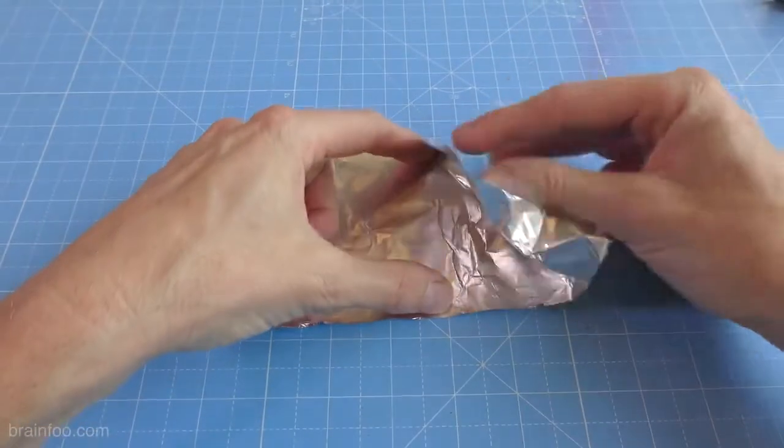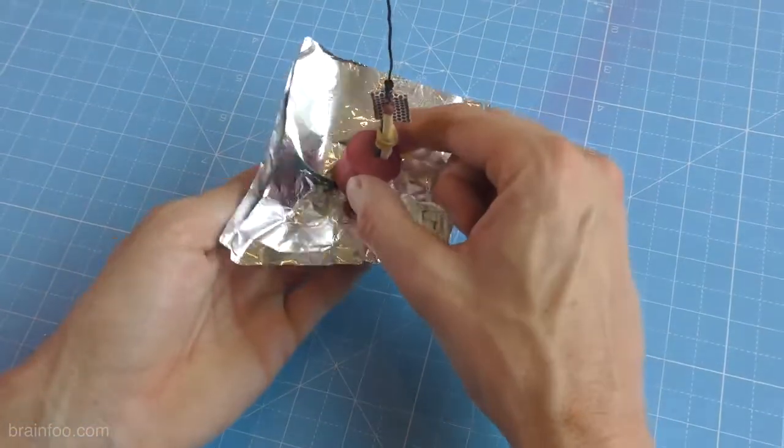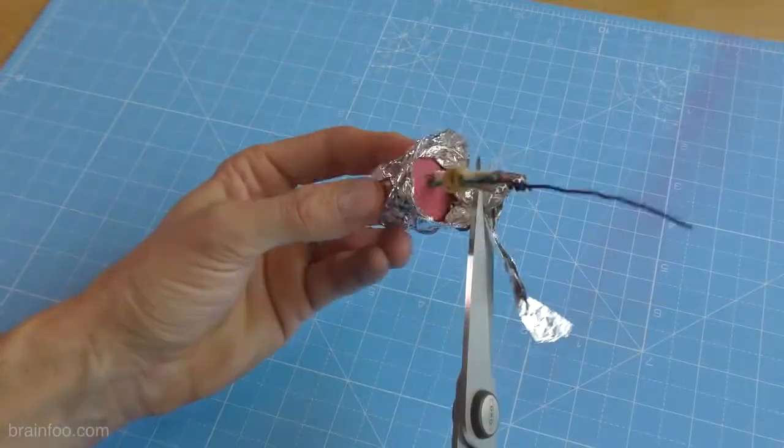Now grab some kitchen foil, cut it into a square and fold it double. Wrapping this around the pellet now holds everything in place and shields whatever you place it in from the heat when it goes off.